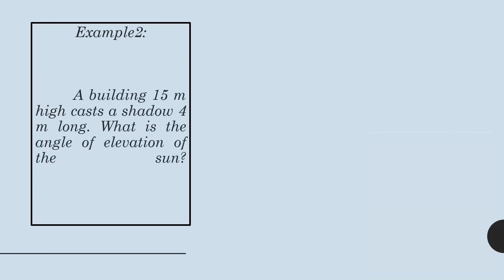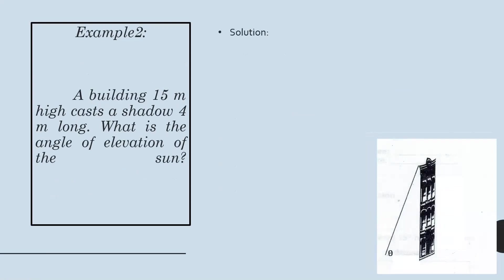Second example: a building 10 meters high casts a shadow 4 meters long. What is the angle of elevation of the sun? Let's illustrate first. Here is a building, and here is the sun, so there will be a shadow which is 4 meters long. We are asked for the angle of elevation of the sun, which is the upward angle, so we solve for this angle.